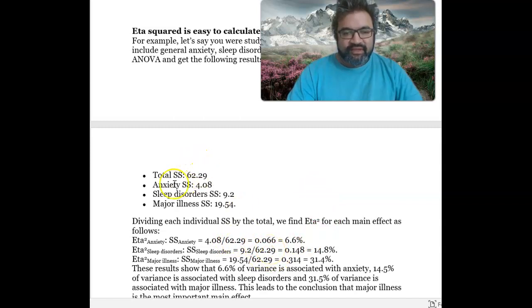Depending on which sum of squares, for instance, the anxiety sum of squares is 4.08, and that's 6.6%. 9.2 divided by 62.29 for sleep disorders, and that matches up.